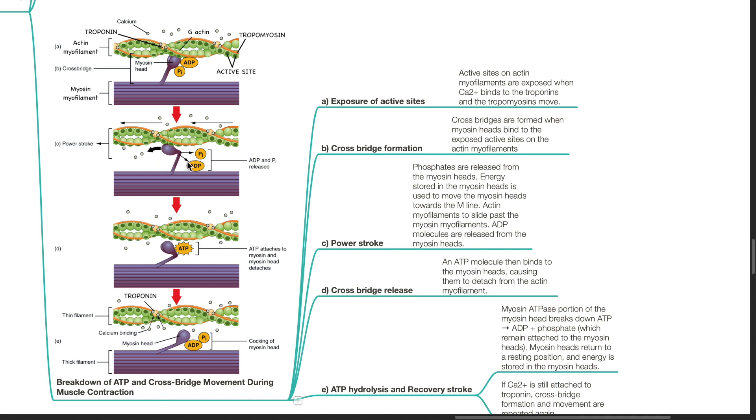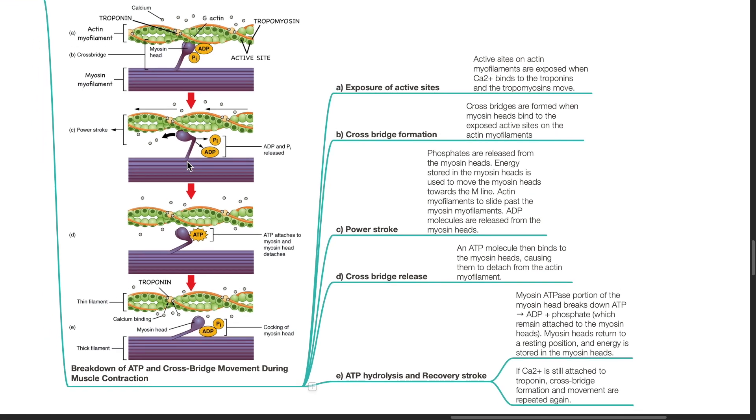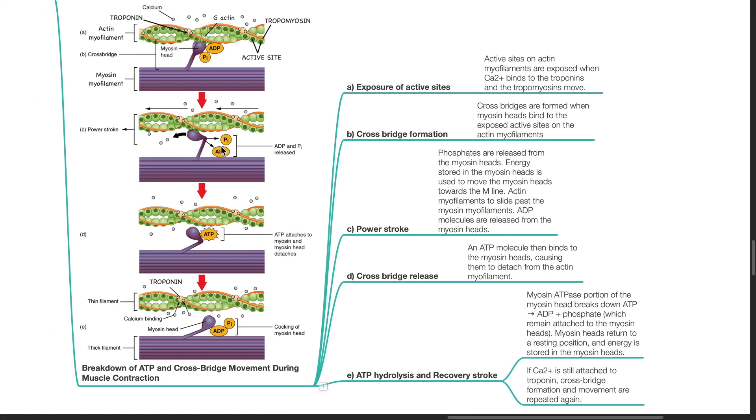Energy stored in the myosin heads is used to move the myosin heads towards the M-line. Actin myofilaments slide past the myosin myofilaments. ADP molecules are released from the myosin heads. Cross bridge release: an ATP molecule then binds to the myosin heads causing them to detach from the actin myofilament.